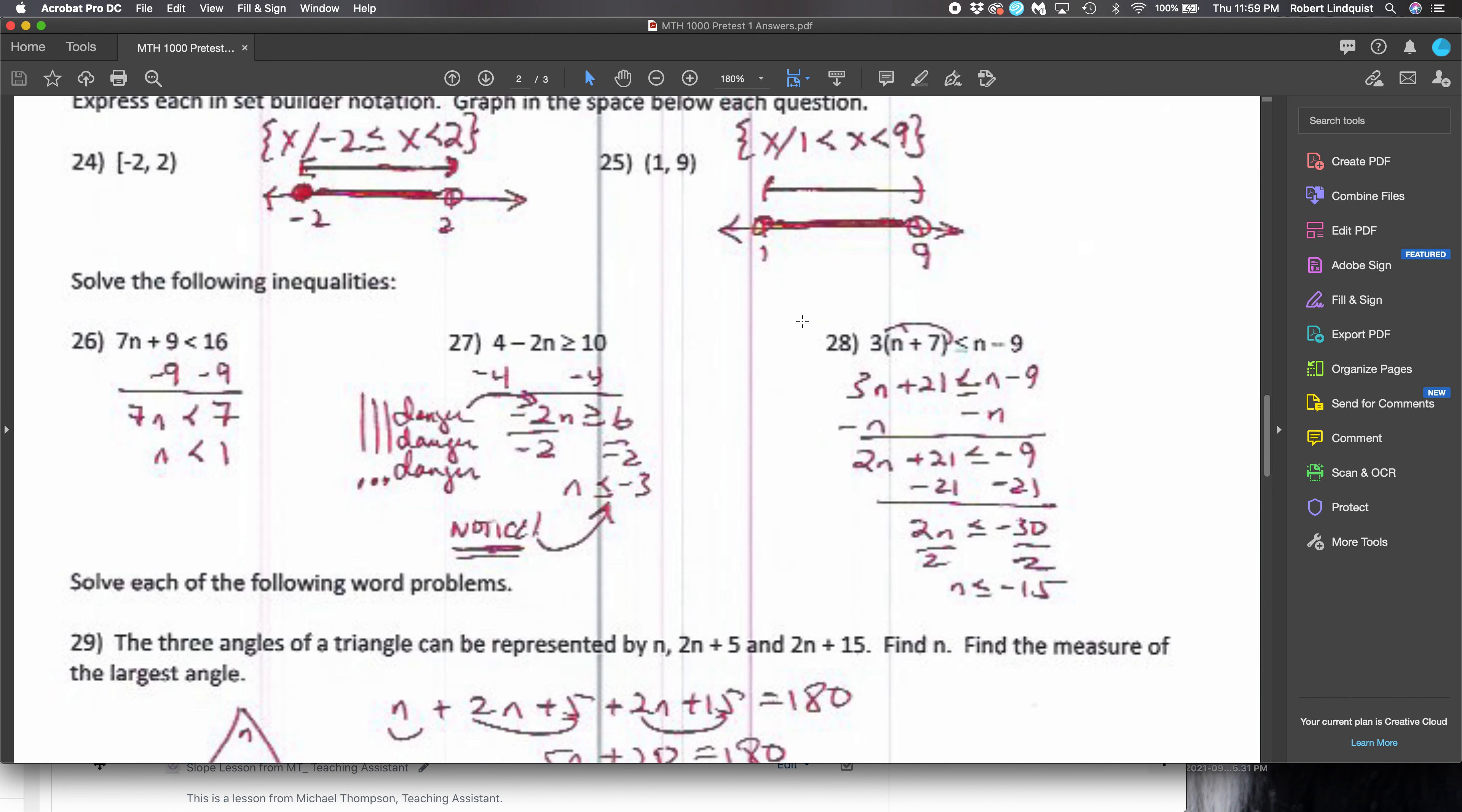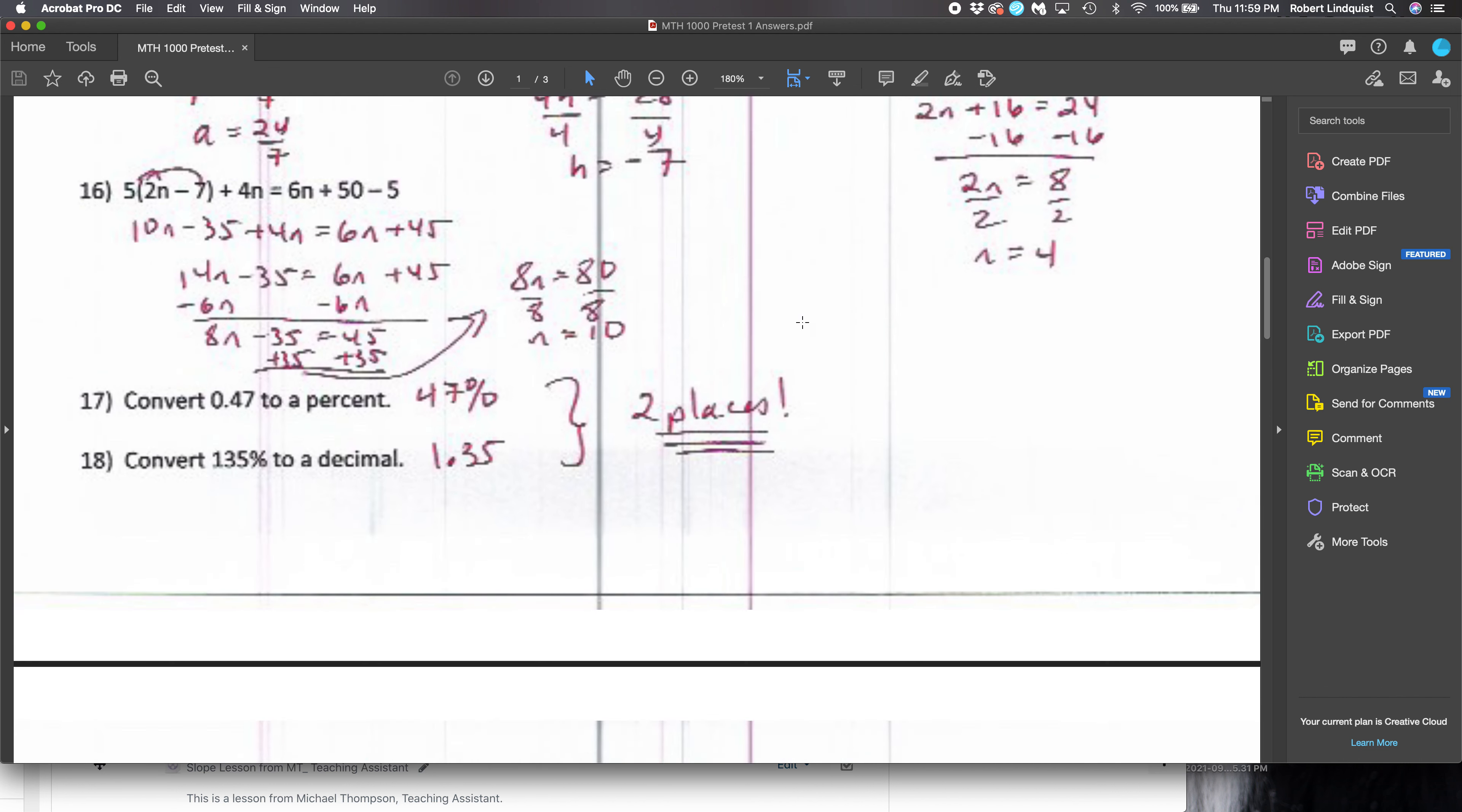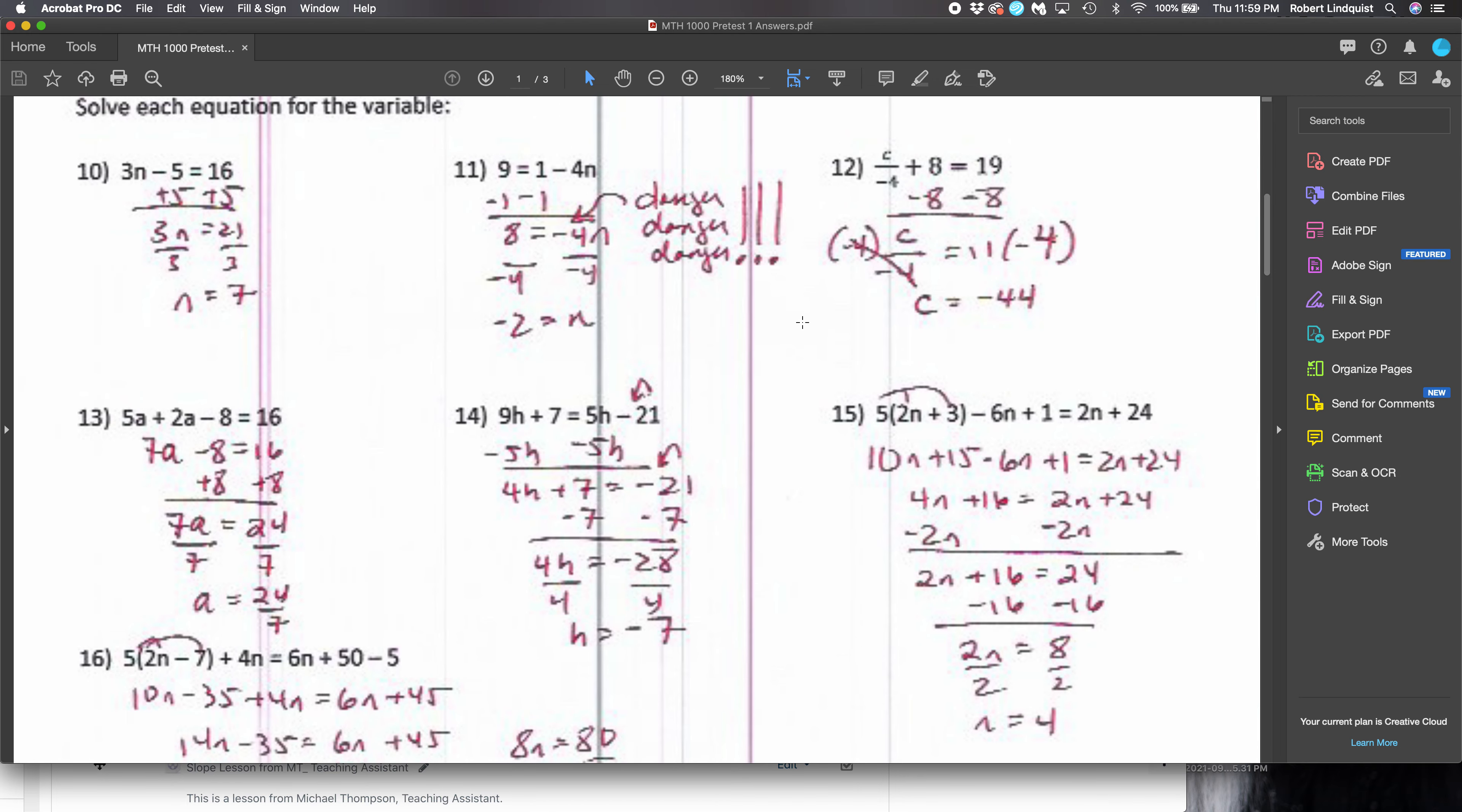And I just want to go back and show you the other time where we did the danger, danger, danger. It's here on number 11. Minus the 1. Again, that 1's positive so we have to do the opposite. Then divide by negative 4. 8 divided by negative 4 is negative 2. Don't lose the negative sign in front of the 4. It's a negative 4n. Okay, so divide by negative 4 and I get n is negative 2.